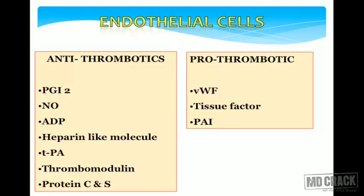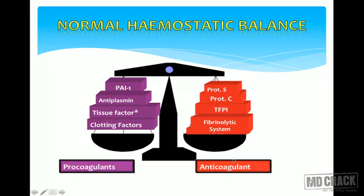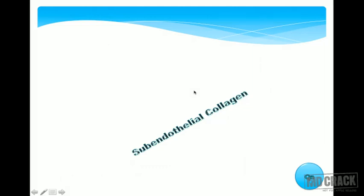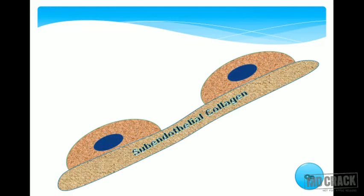This is very commonly tested in MCQs. Anti-thrombotic substances secreted by endothelial cells include prostaglandin I2, nitric oxide, adenosine diphosphate, heparin-like molecules, tissue plasminogen activator (tPA), thrombomodulin, and Protein C and S. Pro-thrombotic substances include von Willebrand factor, tissue factor, and plasminogen activator inhibitors. A perfect balance between pro-coagulant and anti-coagulant factors maintains normal hemostasis; any imbalance can cause thrombus formation.